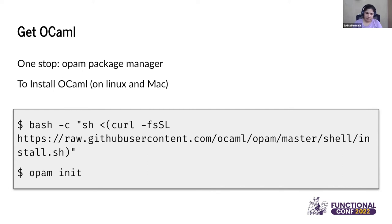After you init opam, it's going to install the default switch. The default switch is usually the latest release compiler, which is 4.13 right now. But opam also allows us to install more than one compiler version at the same time, which makes it easier to test different versions of packages. Some packages support only certain versions of the compiler and will not support newer or older versions, so having multiple compilers makes it easier to use different test cases.